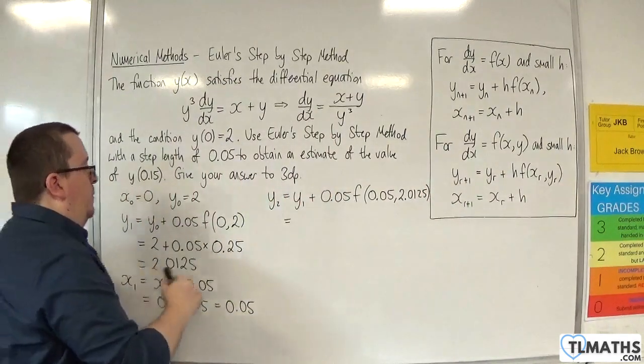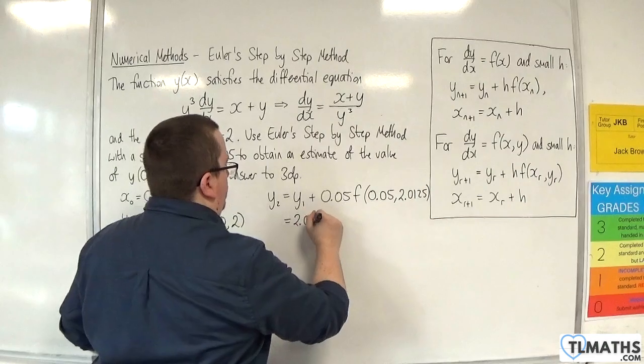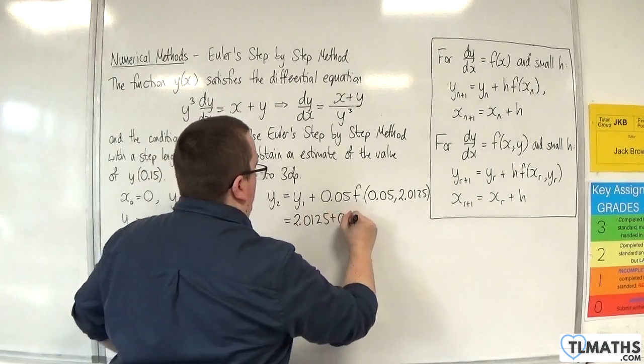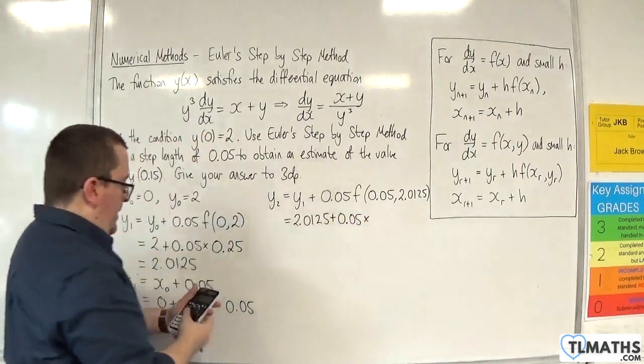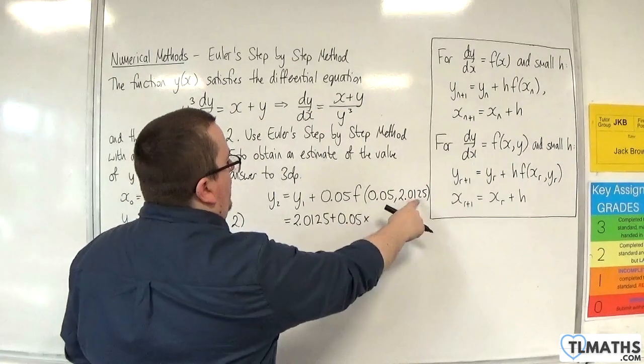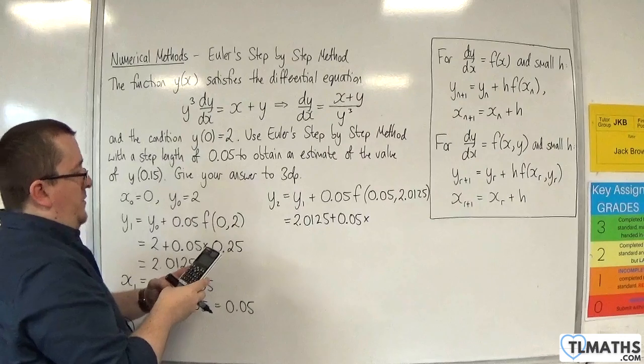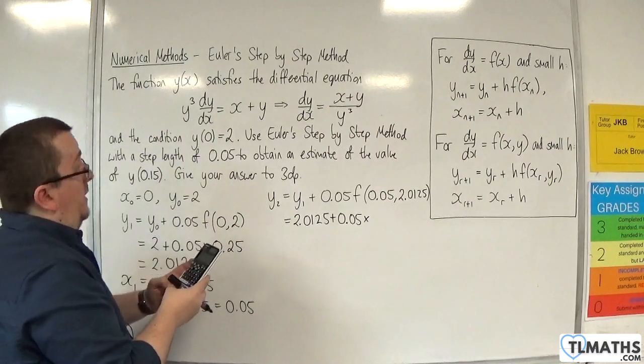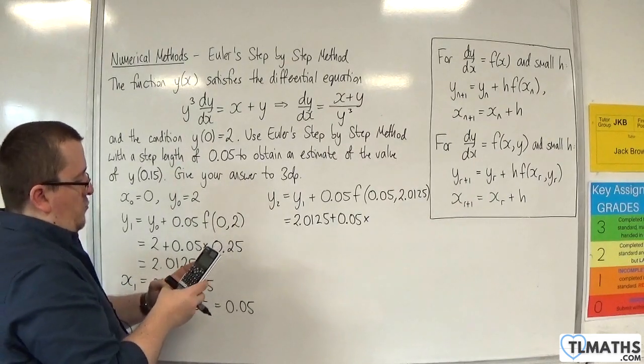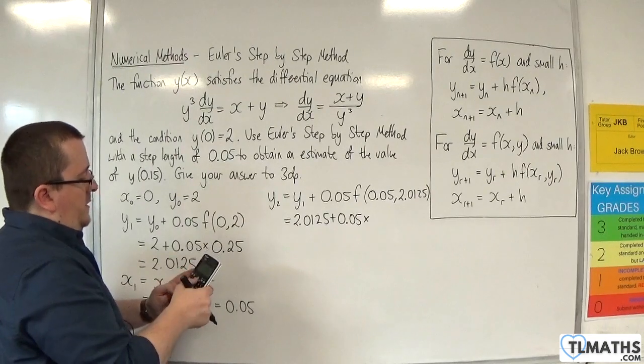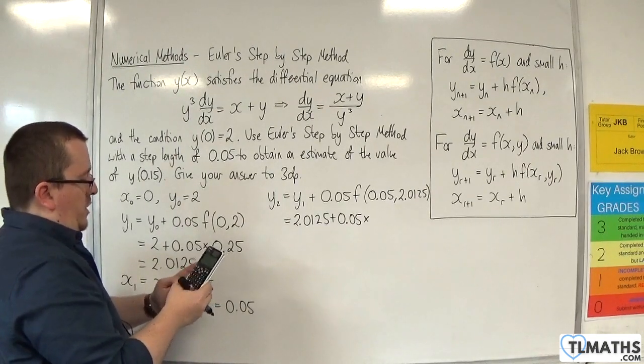So y₁, 2.0125, plus 0.05 times, substitute x is 0.05, y is 2.0125 into that. So we've got (0.05 + 2.0125)/(2.0125³).